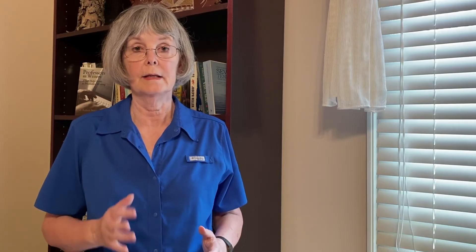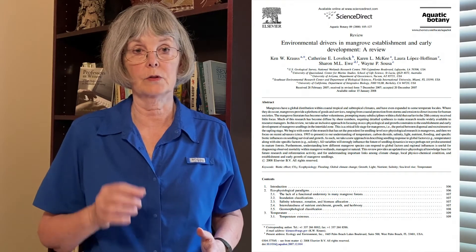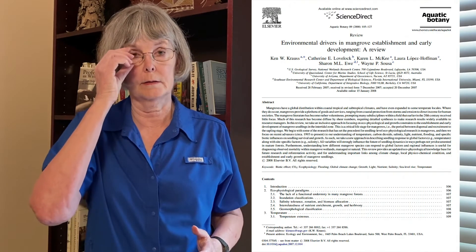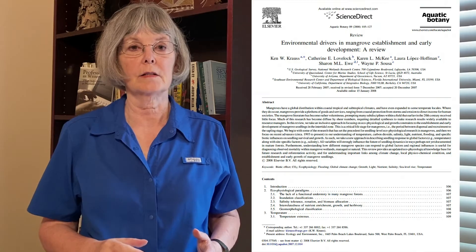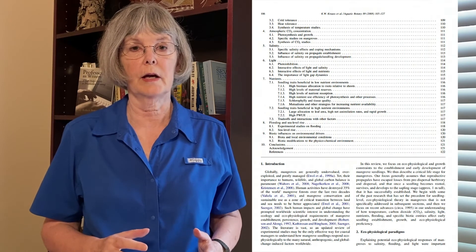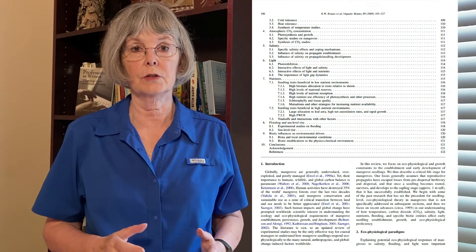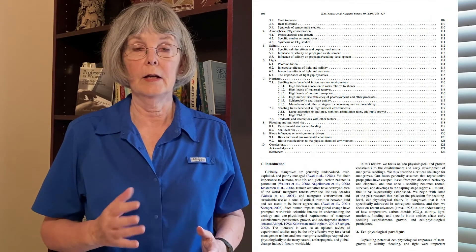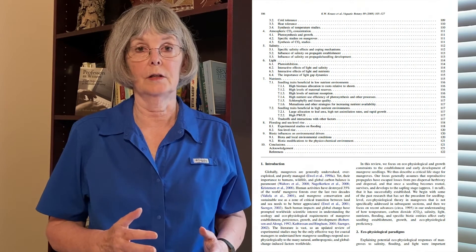Another example in which different areas of research are combined is a paper examining controls on early establishment of tree seedlings. As you can see in the table of contents, the review is divided into sections and subsections focused on different environmental factors such as temperature, nutrient availability, and other controls on seedling survival and growth.